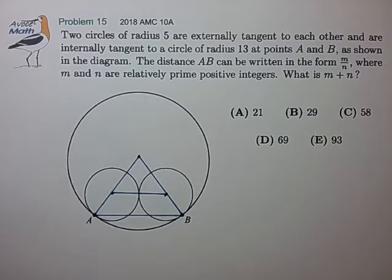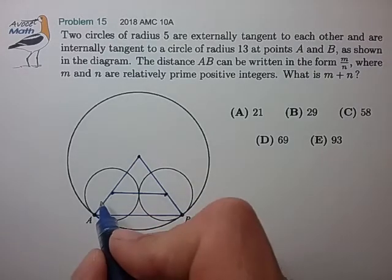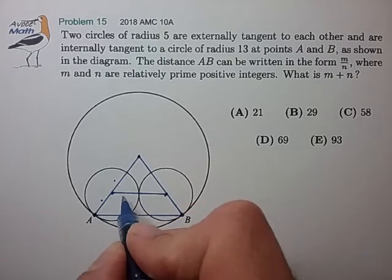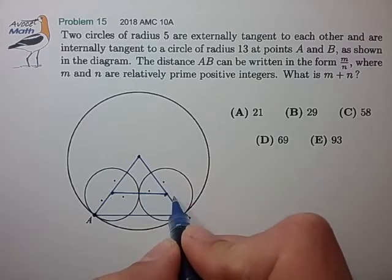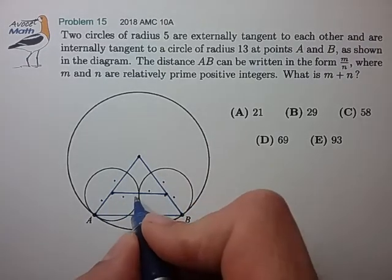Okay, so we have a lot of known line segments. These radii are all of length 5. So the connector segment here has length 10.